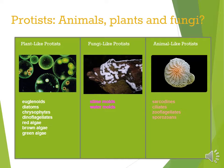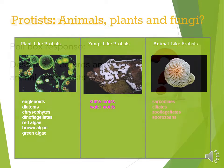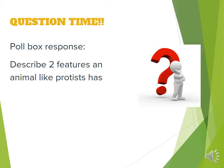Fungi-like protists would be slime molds and water molds. Animal-like protists include zooflagellates, sporozoans, ciliates, and sarcodines — you could look those up and see what's going on with those. Describing two features of an animal-like protist: they have pseudopodia, which are little feet that help them move. They produce spores. They have food vacuoles to help digest prey. They're also called protozoa. They're single-celled and they're heterotrophs, so they eat other things.